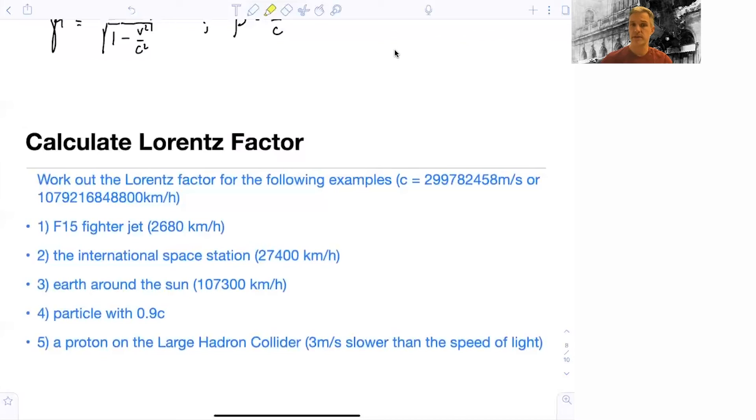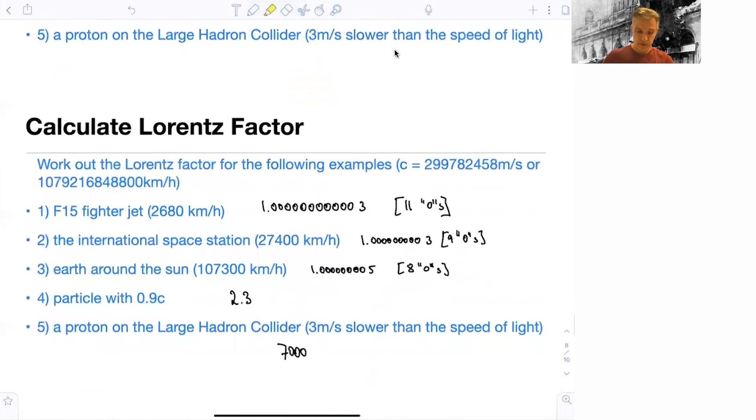So we start with a fighter jet. We look at the International Space Station, the Earth around the Sun, a particle which almost moves with the speed of light, and the proton at the Large Hadron Collider, which is only 3 meters per second slower than the speed of light. So again, stop the video and work out those numbers. You will need a calculator for them.